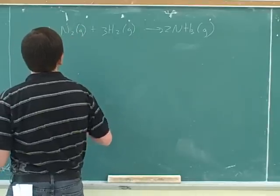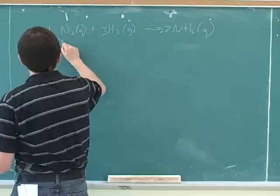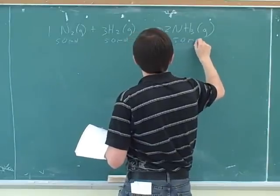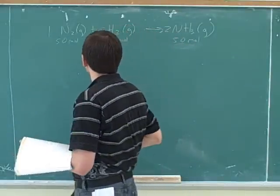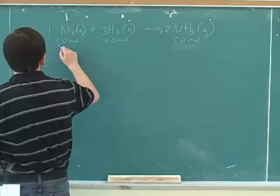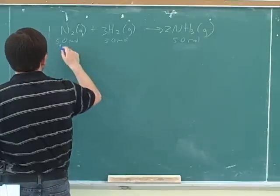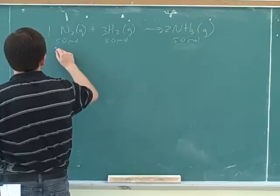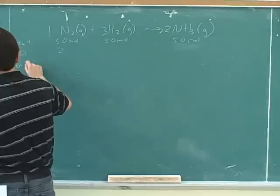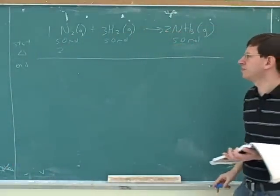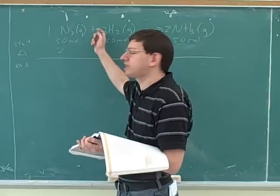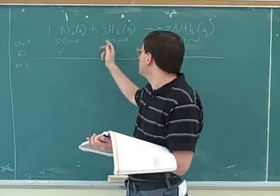Let's say that we start with 50 moles, 50 moles, and 50 moles. And now let's say that we react. One of the most useful tools for chemistry problems is start-change-end tables. Most students don't make nearly enough use of these start-change-end tables. So you write the balanced equation and then you write start, change, end. These numbers here are our starting amounts.